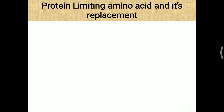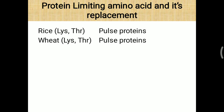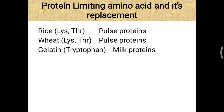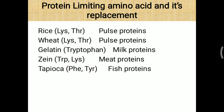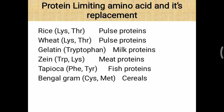Specific examples of protein limiting amino acids and their replacements: Rice, lacking lysine and threonine, should be compensated by pulses. Wheat is also compensated by pulses. Gelatin, lacking tryptophan, should be compensated by milk protein. Zein (protein in maize/corn), lacking tryptophan and lysine, should be compensated by milk. Tapioca, lacking phenylalanine and tyrosine (aromatic amino acids), can be compensated by fish protein. Mung gram, lacking cysteine and methionine, can be compensated by cereals. All these combinations provide the best mutual supplementation.